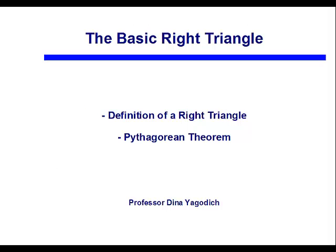And that was a review of a basic right triangle. We talked about what a right triangle is, and we used the Pythagorean theorem to solve for a missing side of a right triangle.